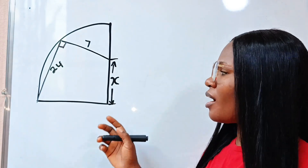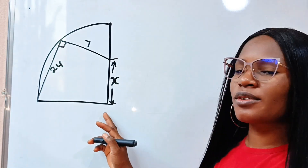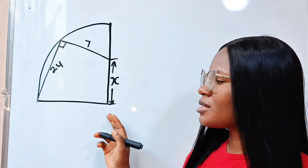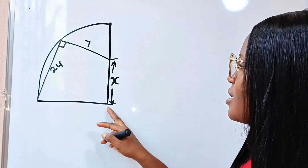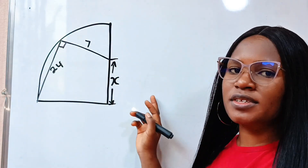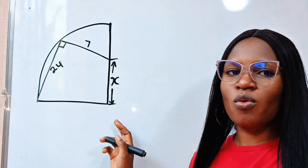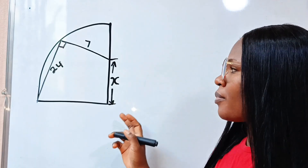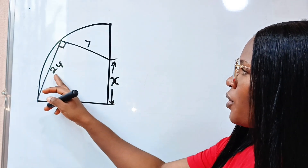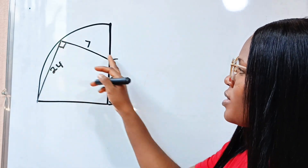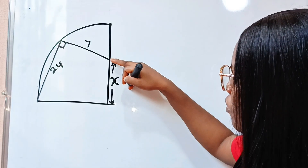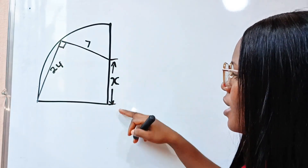So here, we are told this is a quarter of a circle — a quadrant. From here to here is 24 units, from here to here is 7 units, and from here to here is x.